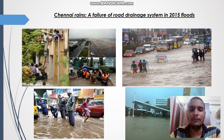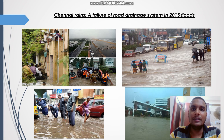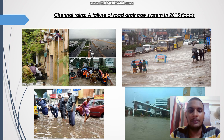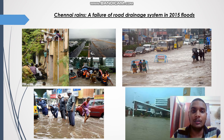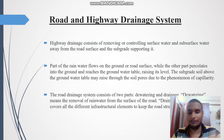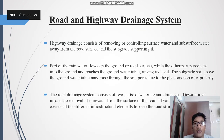Hence the water could not find a way to flow. The failure of the drainage system in Chennai and other parts of Tamil Nadu made the situation worse. Therefore, proper drainage system planning is essential for any urban planning. Now we are going to see what is the highway drain system.